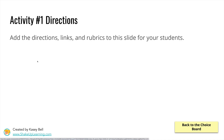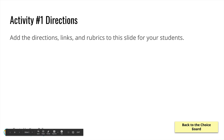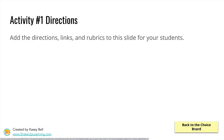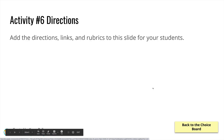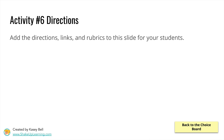If I click on 'Directions,' here's Activity 1 — you'd add your directions, links, and rubrics here. There's a button at the bottom to go back to the choice board. We can click on any of the squares — I'll go to number six. That's how simple this can be.